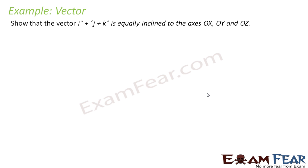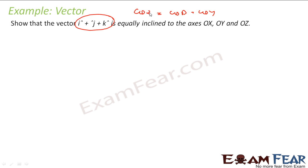We have to show that the vector i plus j plus k is equally inclined to all the axes. To show this, we can prove that cos alpha equals cos beta equals cos gamma, because alpha, beta, and gamma are the angles which this vector R makes with the x, y, and z axes. If the inclination is equal, alpha, beta, and gamma have to be equal, or cos alpha, cos beta, and cos gamma have to be equal. If we can prove that, then they are inclined equally.